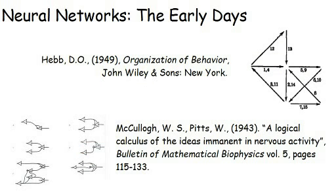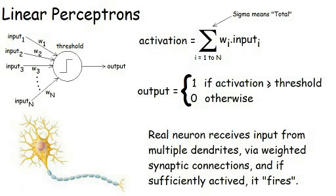Even as early as the 1940s, there were tentative steps being taken to model very simple parts of the brain in computer programmes and mechanical devices. In 1949, the pioneer of neurology Donald Hebb proposed that information could be stored in the connections between neurons in the brain, and that they would form overlapping sub-networks that would activate and interact with each other. Six years before that, Warren McCulloch and Walter Pitts discussed the modelling of individual neurons as mathematical processes. Progress was slow, but by the 1960s, simple neural networks were starting to appear, using models of neurons called linear perceptrons.